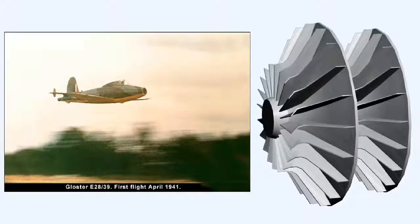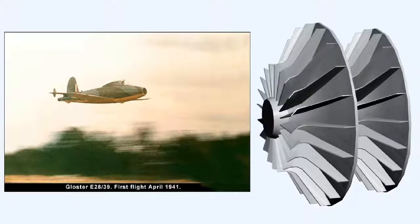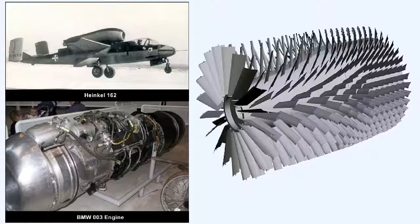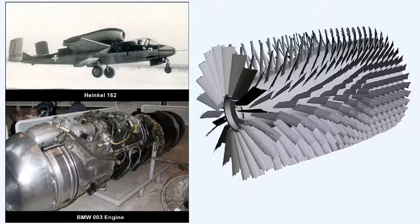One critical difference between the German engines used in the Heinkel and the later Messerschmitt 262, and those developed from Sir Frank Whittle's original engine, was the type of compressor employed. While the Whittle engine used a centrifugal compressor, the German engines — like the BMW 003 model used in the Heinkel 162 — utilized an axial flow compressor.